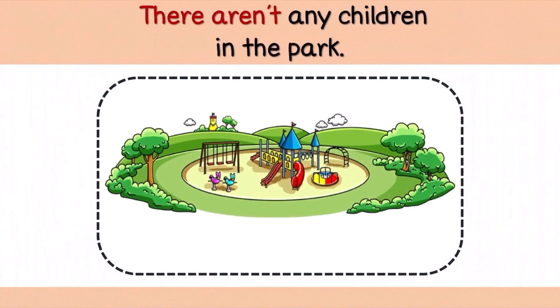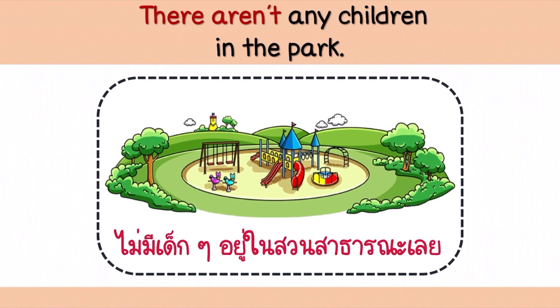ต่อมาดูตัวอย่างสนามเด็กเล่นนะคะ คุณครูอ้นแต่งประโยคว่า There aren't any children in the park. ประโยคนี้แปลว่า ไม่มีเด็กๆ อยู่ในสวนสาธารณะเลย คุณครูอ้นใช้ There aren't เนื่องจากเด็กๆ มีหลายคน จึงใช้คำว่า any children นะคะ